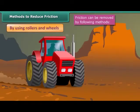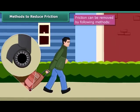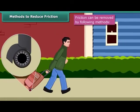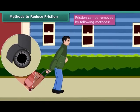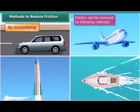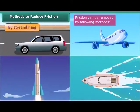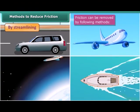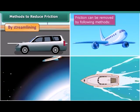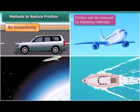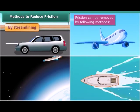By using rollers and wheels: many heavy objects like big suitcases are provided with small wheels called rollers to reduce friction so that they can be carried easily by pulling. By streamlining: the bodies of cars, aeroplanes and rockets are streamlined to reduce air friction. The bodies of boats and ships are also streamlined to reduce the friction of water.